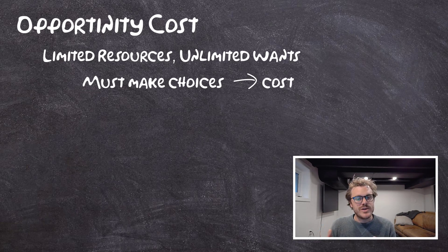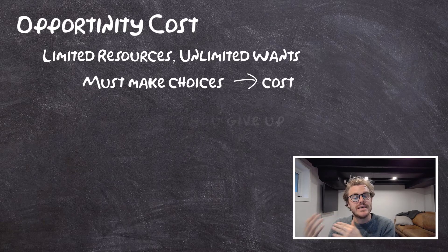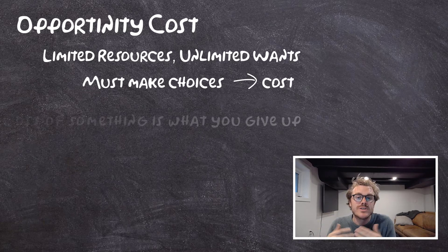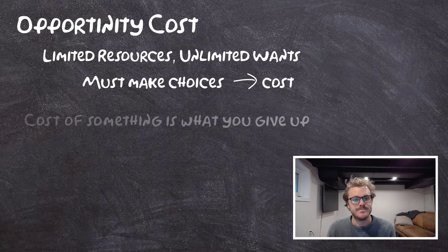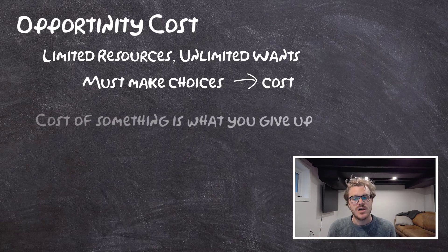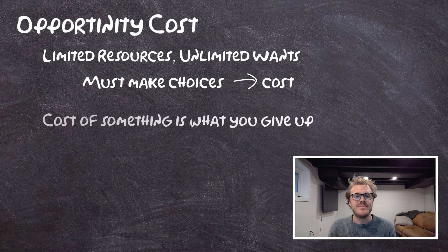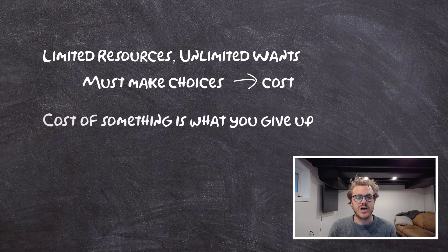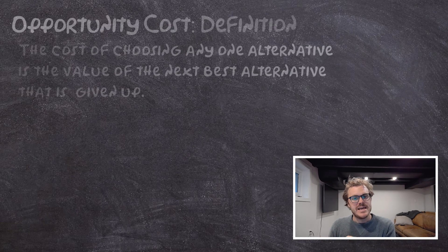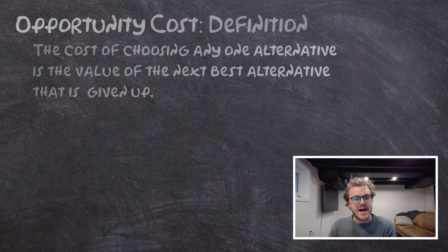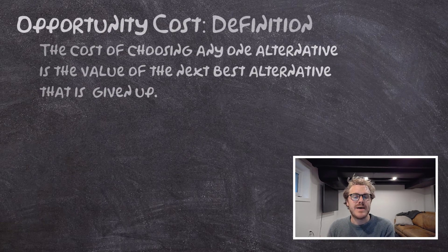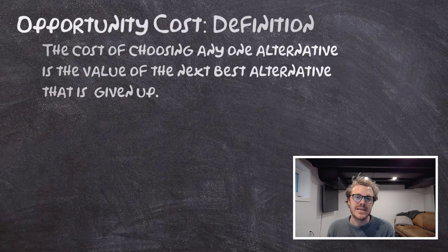We should start thinking about the cost of doing something as what you give up in order to do that thing. More formally, the definition of opportunity cost is: the cost of choosing any one alternative is the value of the next best alternative that is given up.